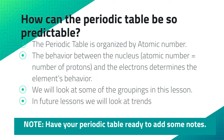So how can the periodic table be so predictable? The periodic table is organized by atomic number. The behavior between the nucleus — the atomic number, which is the number of protons — and the electrons determines the element's behavior. So we'll look at some of the groupings in this lesson.